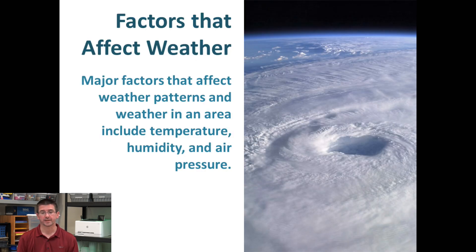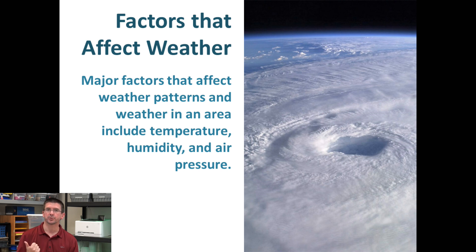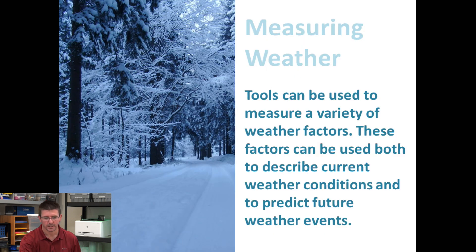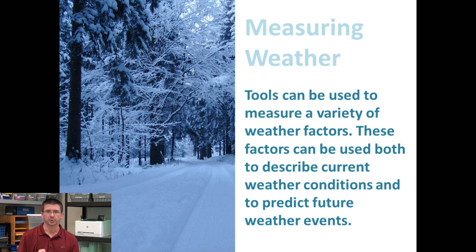Our weather on Earth is affected by a variety of factors that we'll be talking about in detail throughout this unit. The major things that really affect our weather patterns include temperature, air pressure, and humidity, as well as the general climate of the area we're looking at. When we measure weather, there are all different factors we can measure and a variety of different tools we can use to measure and record weather in our area.